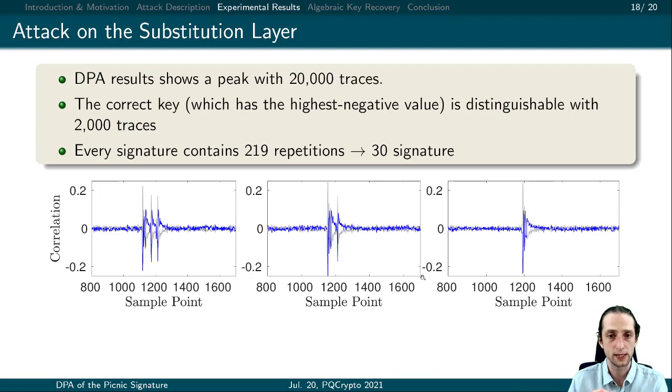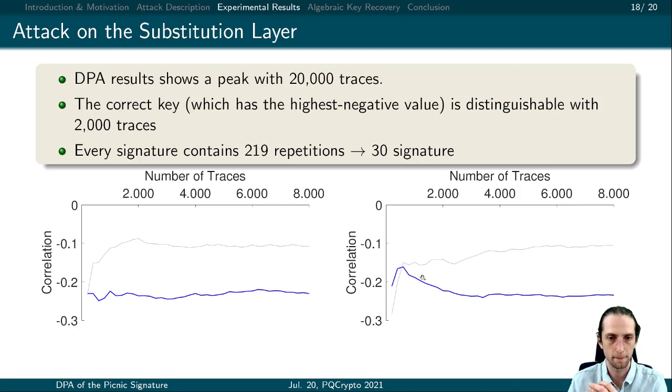When we look at the second attack, we see a similar pattern here. We can see three bits of the same S-box. Although we can see two symmetrical lines here, the highest negative value gives us the correct bit. This is because of the position of our electromagnetic probe. When we take a look at the change of the values with respect to the number of traces, the success of the attack is much clearer. The highest negative values are clearly distinguishable with 2,000 traces. Similarly, we can get the correct key using 30 individual signatures.